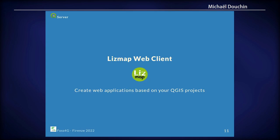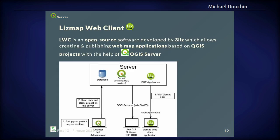Now I will speak about LizMap WebClient. It's a client created by 3Liz. The aim is to publish projects online in your browser — it uses QGIS Server, which I'll use to illustrate its use. You put your projects on the server alongside QGIS Server and PostgreSQL, and the LizMap application lets you use a browser to see the map rendered by QGIS Server. You can also use other GIS solutions with it.